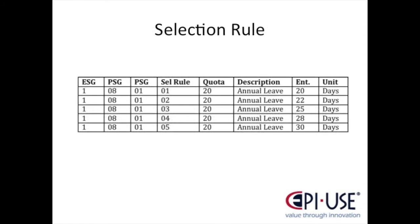The assigned selection rule is used as a lookup key in the selection rule table. This table brings together key configuration elements like validity and reduction periods defining the leave year, for example 1st January to 31st December. Reduction rules define if and how entitlement should be reduced for starters, leavers, and part-timers. Rounding rules define how a calculated entitlement factored by a part-time percentage should be rounded, say to the nearest 0.5 days. The selection rule table adds a selection rule key field to the base entitlement table. So if an employee is assigned to selection rule 01, they receive 20 days; 02 gives 22 days, and so on.